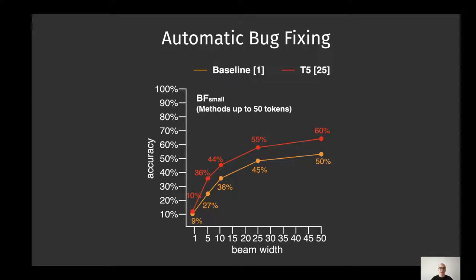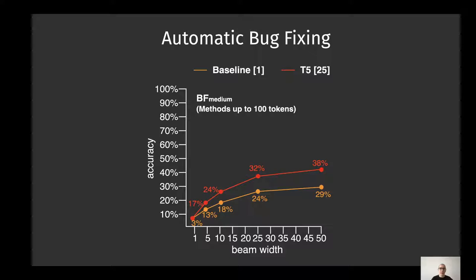Now let's discuss in detail the results for the automatic bug fixing task. On the X axis we have the beam width, and on the Y axis we have the accuracy. We are reporting the same configuration used by Tufano and colleagues in the original paper, where they used the beam decoding mechanism for generating predictions. The T5 model is able to get an improvement over the baseline on each single beam width considered. When the authors push the envelope — meaning the number of tokens permitted ranges from 50 to 100 — the T5 model is still able to outperform the baseline when the beam width ranges from 5 to 50.